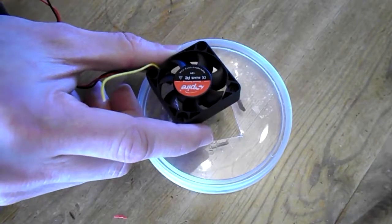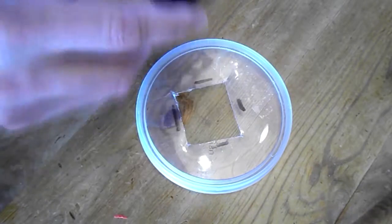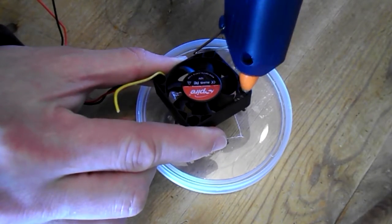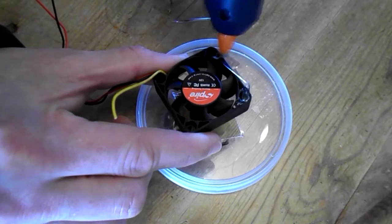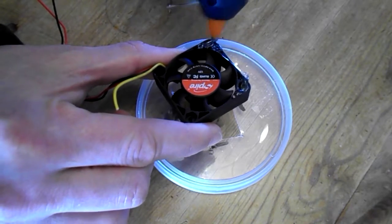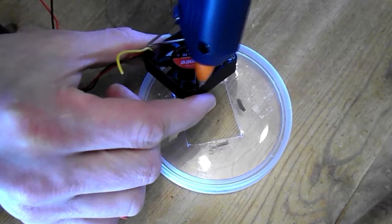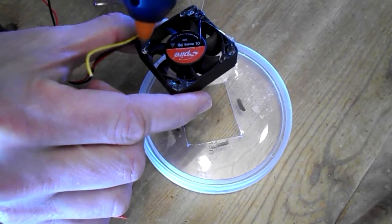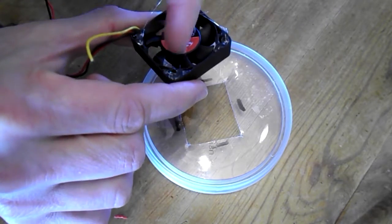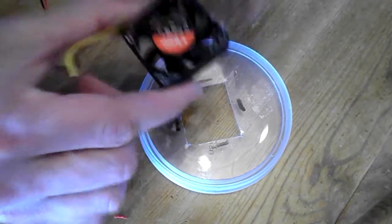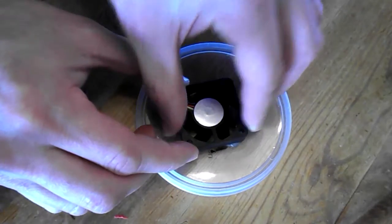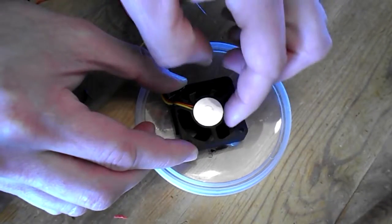What I'd recommend is using a glue gun if you can, or any other adhesive. Just glue slightly around the edges. Don't get any on the fan, of course. Let it set. That's it sealed on.